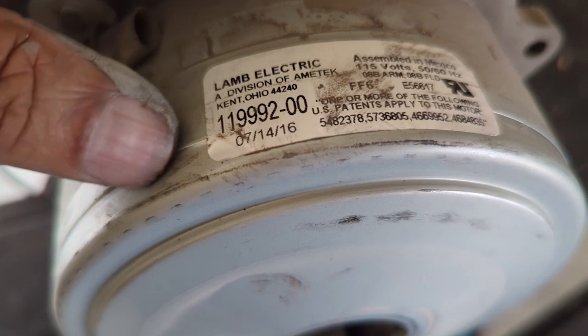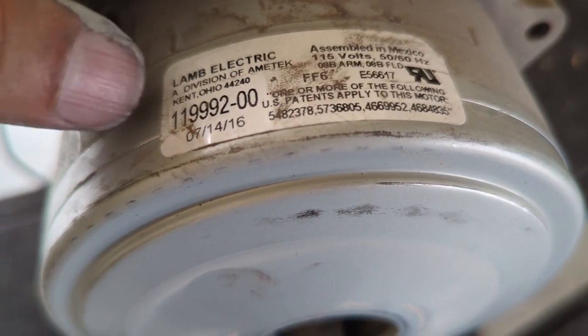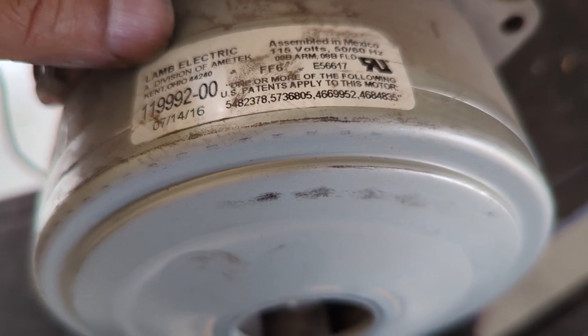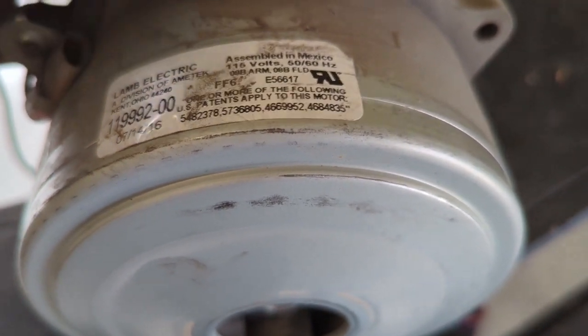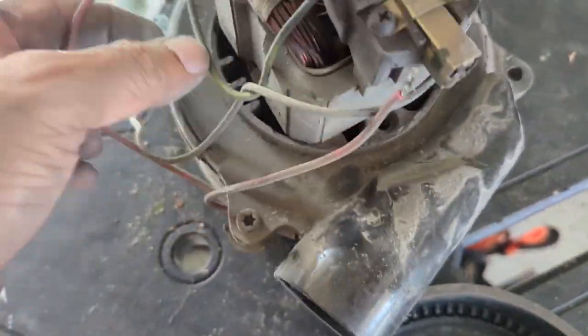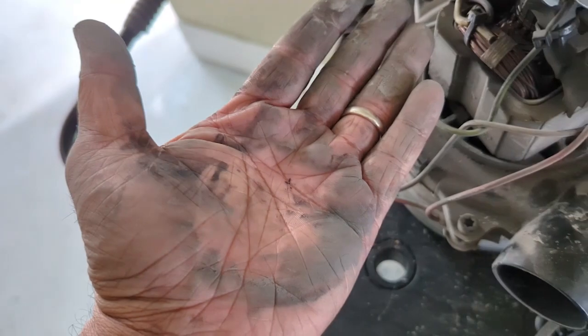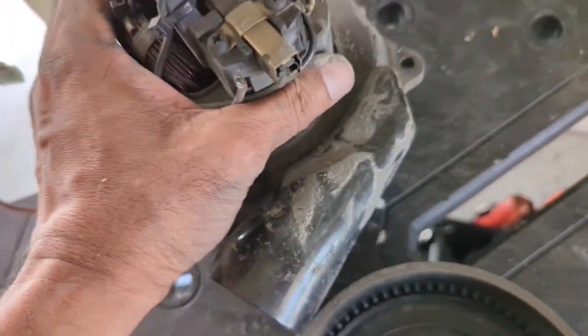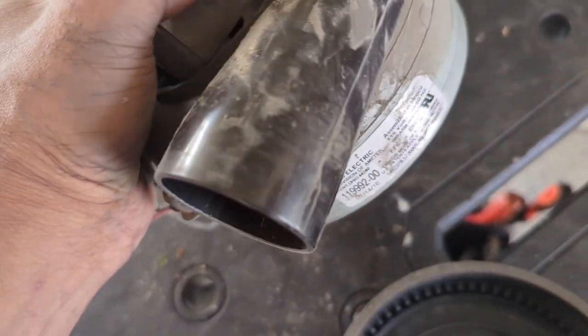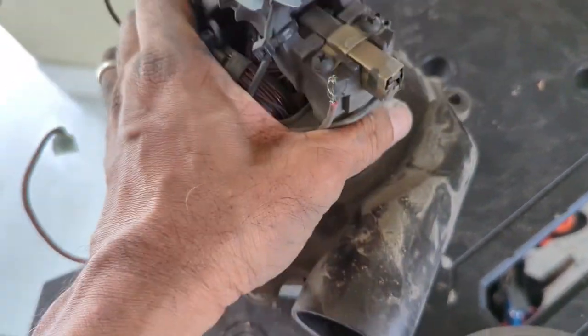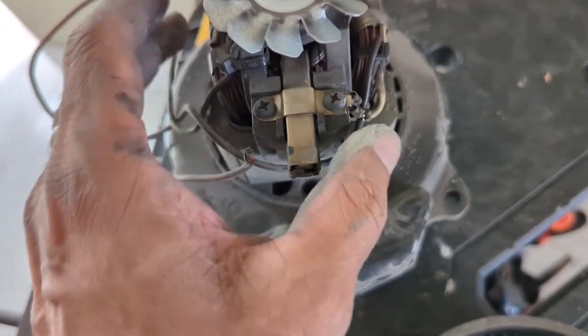It's a Lamb Electric Division of Ametek. This is a 11992-00, assembled in Mexico, which is nice—it's not from China. But I guess these things do wear out, and considering how dirty it is, it could be all fouled up because of the dirt as well. So when I look at the brushes, I'll determine if I need to replace the unit or just order brushes.